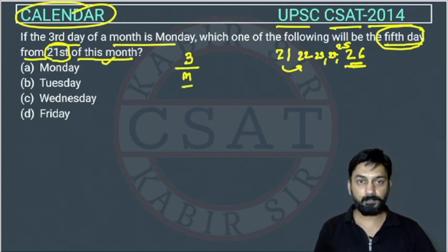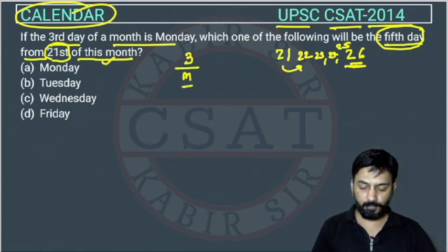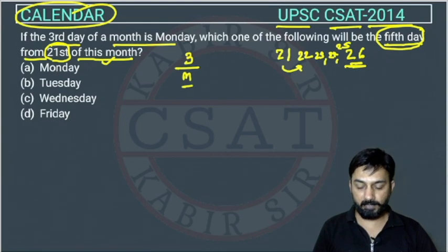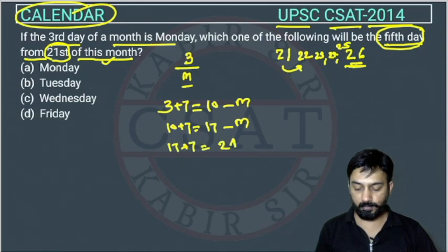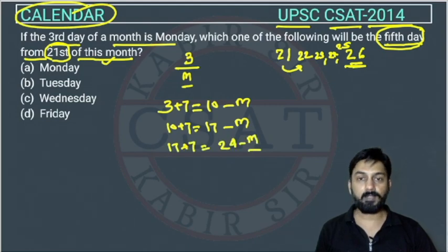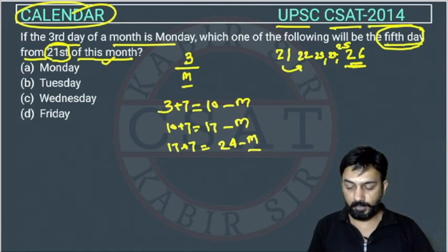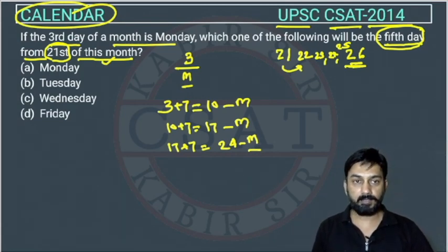This is Monday — a very easy question if you know that the calendar repeats every 7 days. There is a Monday on the 3rd, so the next Monday will be on 3 plus 7, that is the 10th. Then 10 plus 7 is 17 — again Monday. Then 17 plus 7 is 24 — again Monday. So on 24th there is a Monday, then 25th will be Tuesday and 26th will be Wednesday.